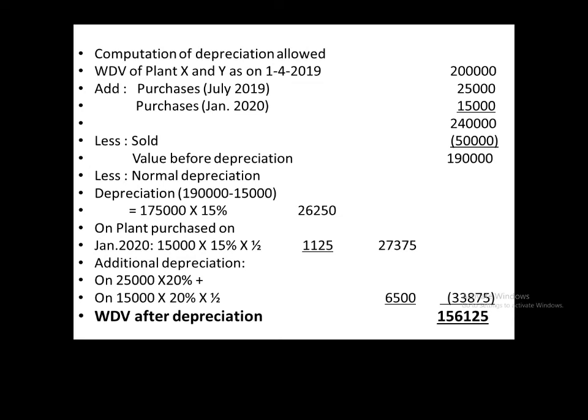For normal depreciation at 15%, the January purchase of 15,000 is eligible for only half depreciation since it was purchased in January. After deducting 15,000 from 1,90,000, we get 1,75,000. On 1,75,000 — which includes the old plant and the July purchase — full depreciation at 15% is charged, giving 26,250.